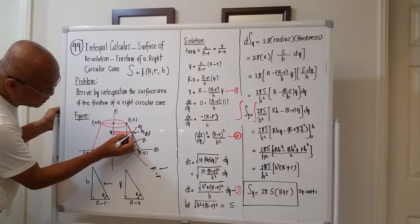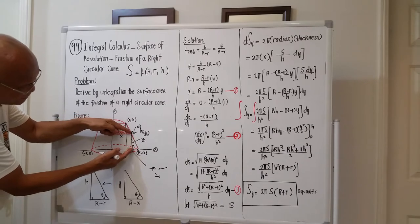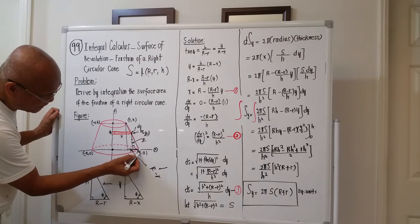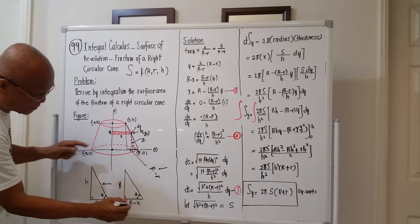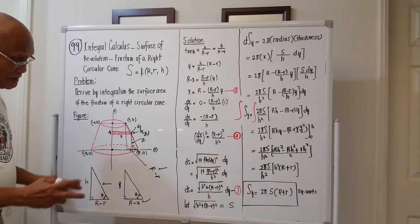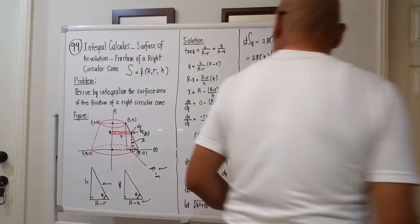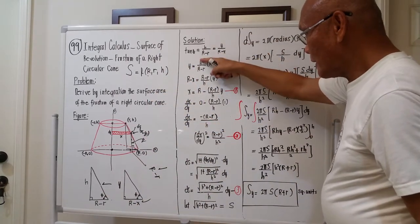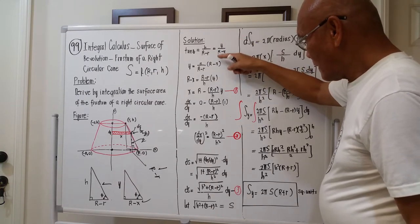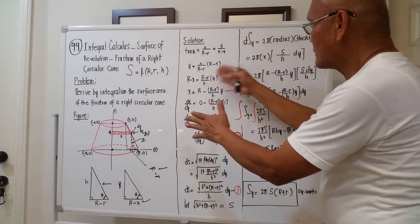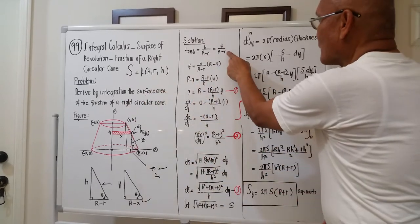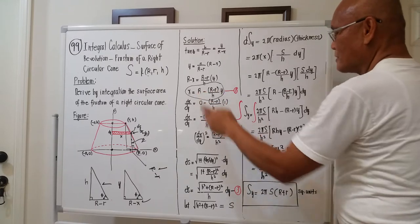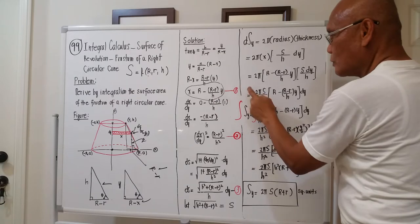From the coordinate diagram, the point on the slant edge has height y, and the adjacent side is (R − x). Using tangent of theta with both triangles — tan θ = h/(R − r) = y/(R − x) — and simplifying, we derive Equation 1: x = R − [(R − r)/h]·y.